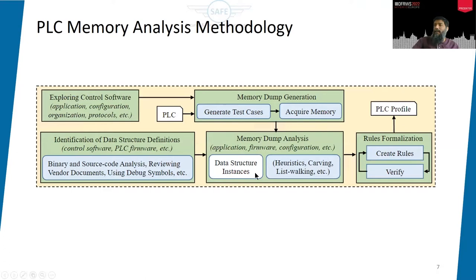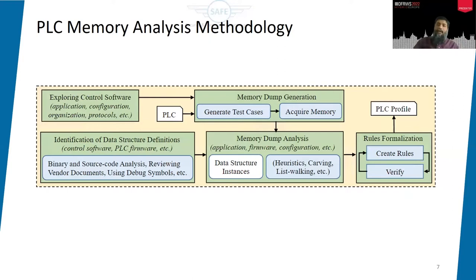We also identify if data structure definitions are available. In some cases source code or vendor documentation about data structure definitions exists — debug symbols, etc. If not, we acquire the memory, do the analysis, find data structure instances, then refine those instances and apply heuristics, carving, and list-walking based rules to identify data structure definitions. We verify those definitions and finally create a profile. In our case, the profile is created as a Python library that can be readily used for any subsequent memory dump of the same PLC to extract all kinds of forensic artifacts.